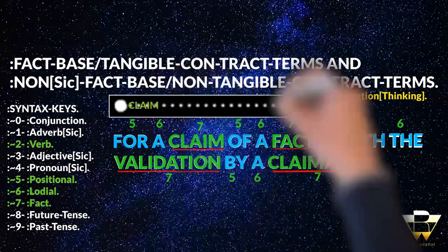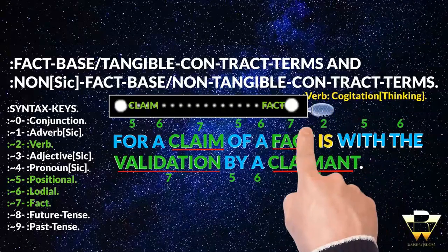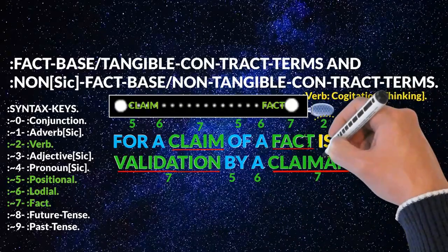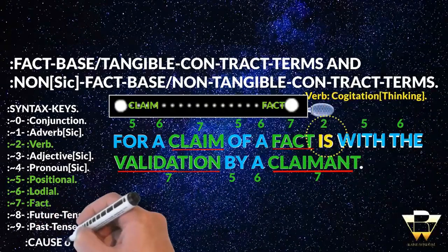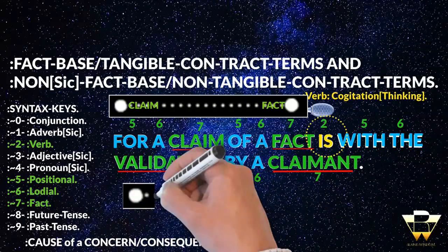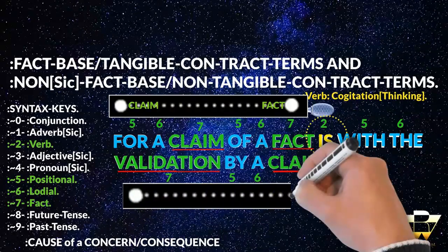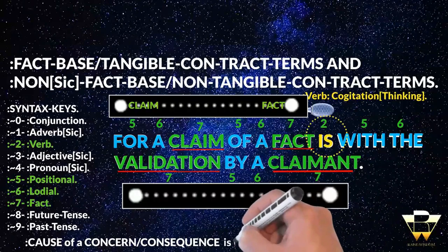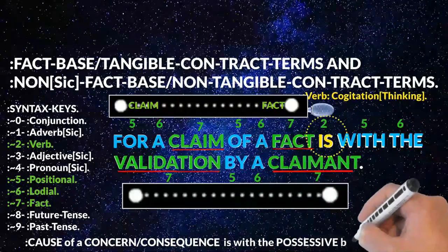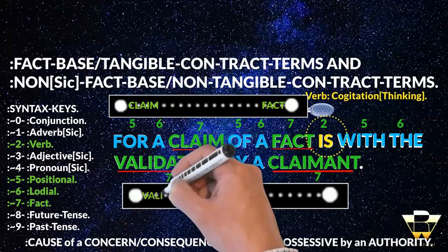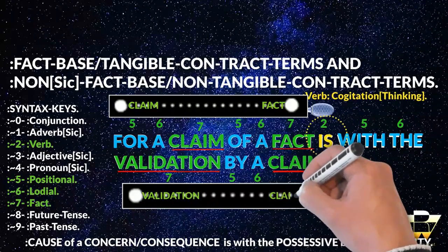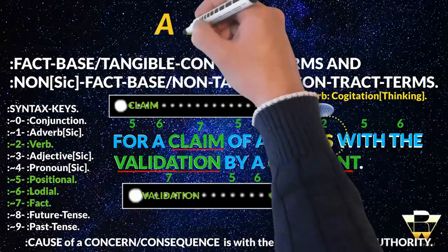So you have 'for a claim of the facts' — now you can position with correctness your verb of thinking after the cause and the consequence, the two facts, so you can continue along that same straight, level, plain, geometric line into the possessive and authority with the validation by a claimant. The claimant is the authority, of course, of this whole thing. Validation is what you must possess in order to make a claim of the facts.